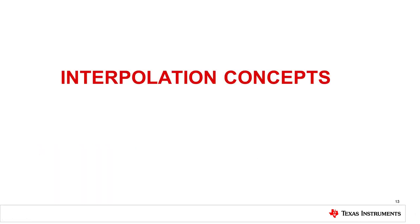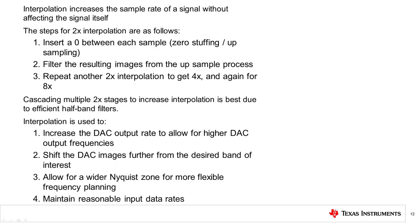In this next section, we will discuss interpolation concepts. This will include a definition, time domain view, frequency domain view, advantages and disadvantages, and some example TI parts that are using interpolation. What exactly is interpolation? In digital signal processing, interpolation or upsampling is the process of increasing the sampling rate of a signal without affecting the signal itself.